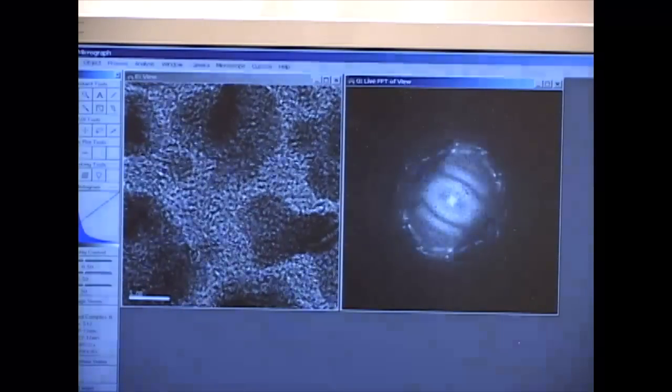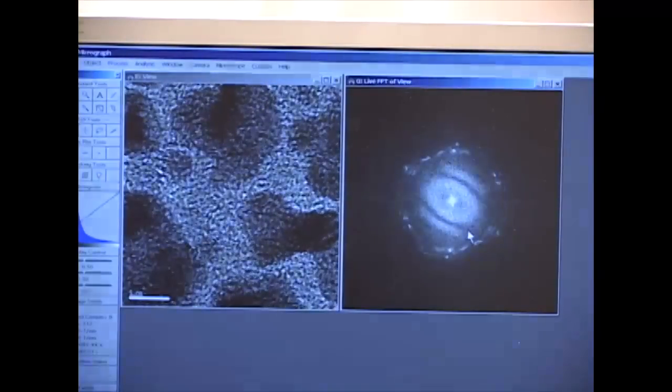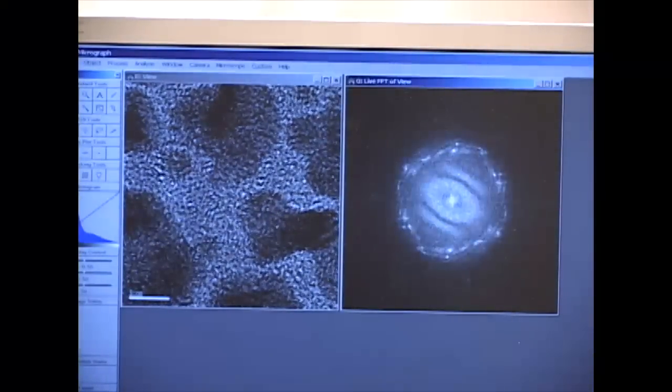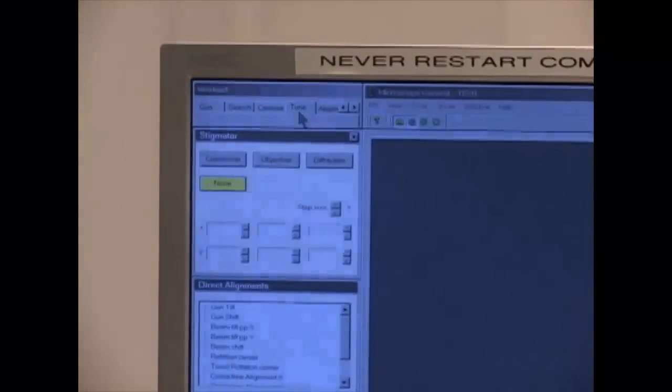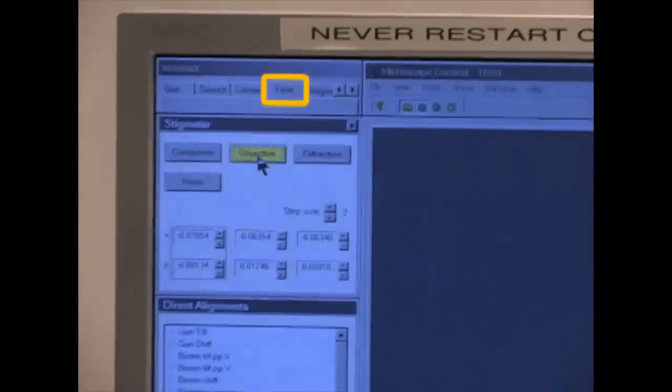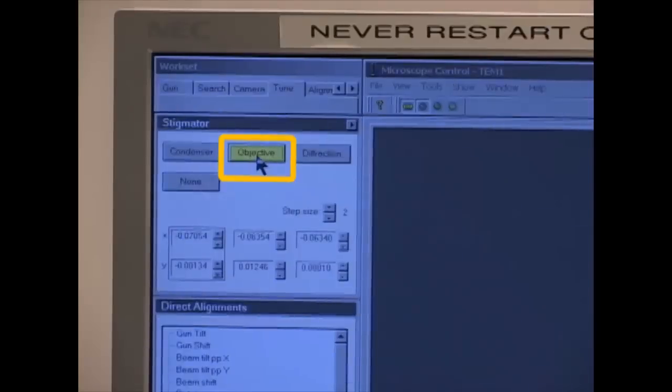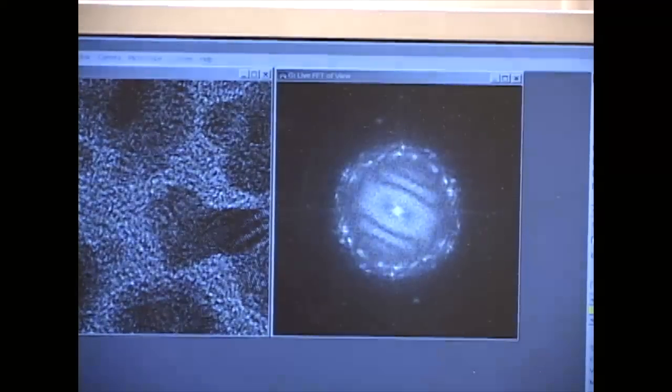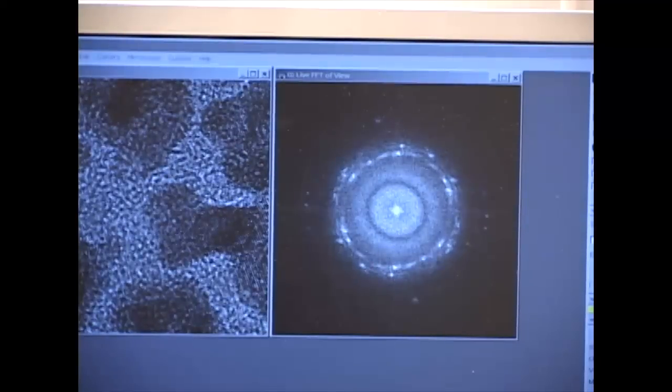Higher magnification is more sensitive to objective stigmation, so it is necessary to correct it again. In the Microscope Control, select Tune, Objective, and then use the Multifunction knob to make the FFT image round.